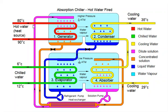The hot water enters at 90 degrees centigrade, loses its heat, and returns at 80 degrees centigrade. This hot water can be obtained through a gas burner or from the exhaust chimney of large industrial generators. The dilute solution loses its water as vapor, and the remaining concentrated lithium bromide solution goes downward.